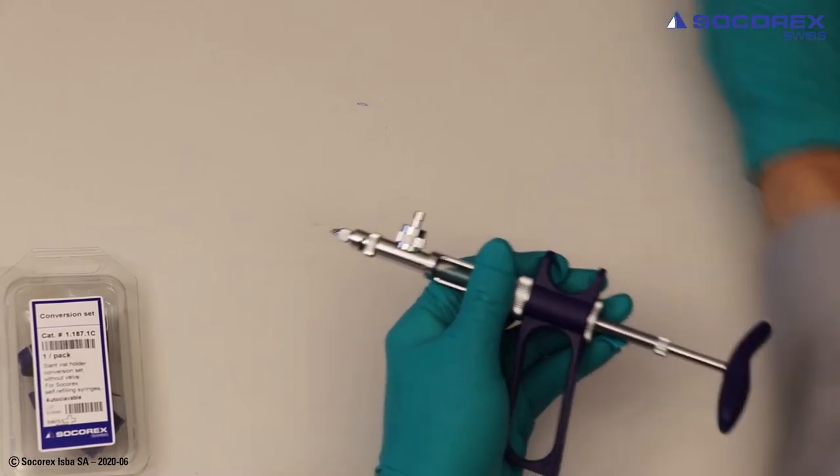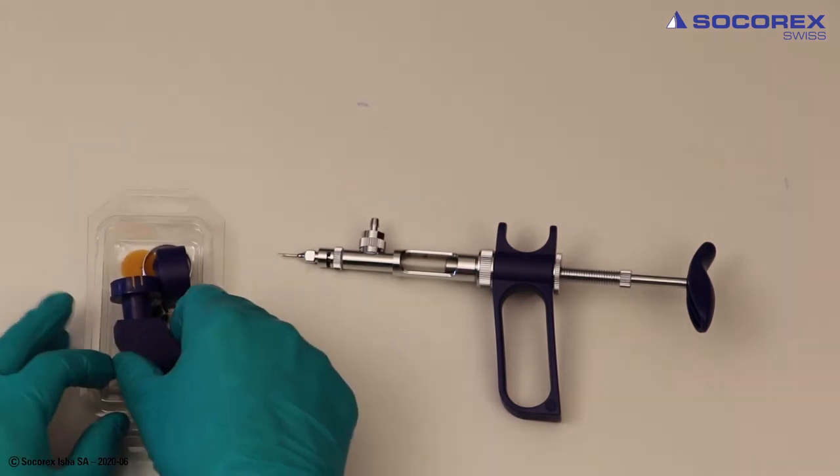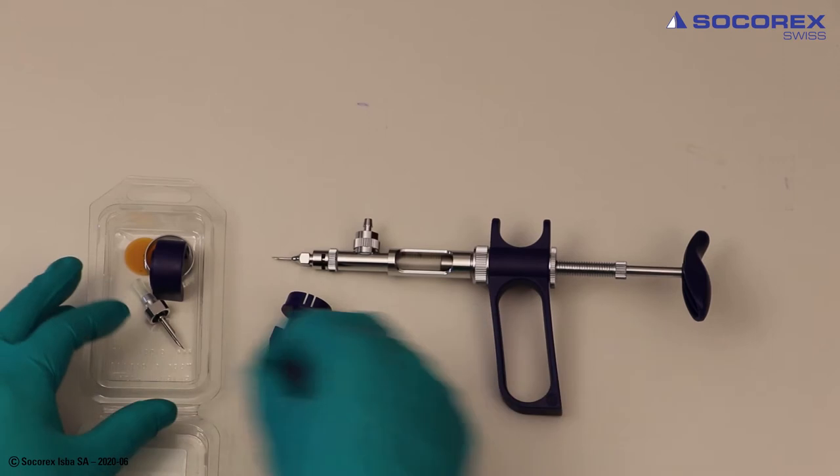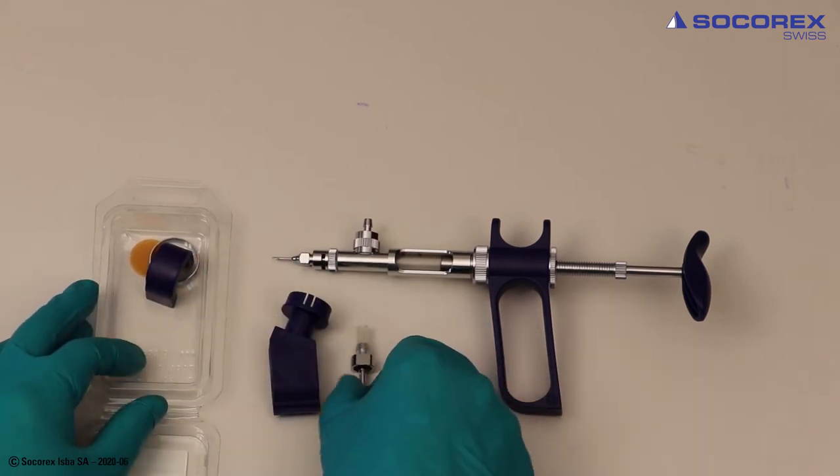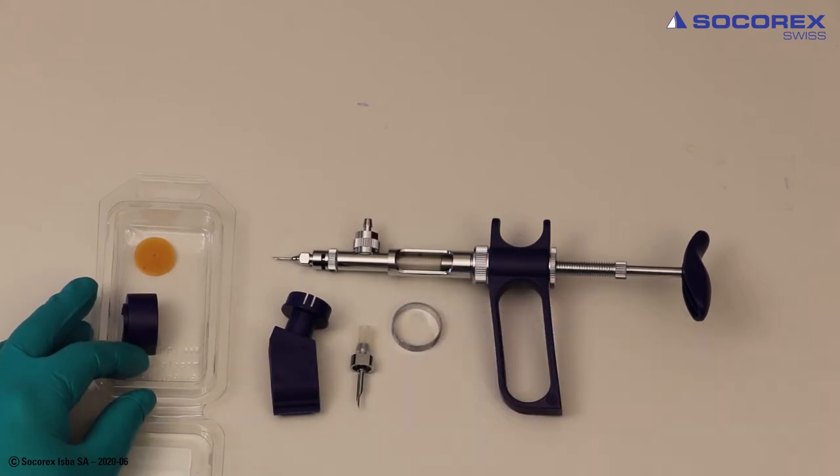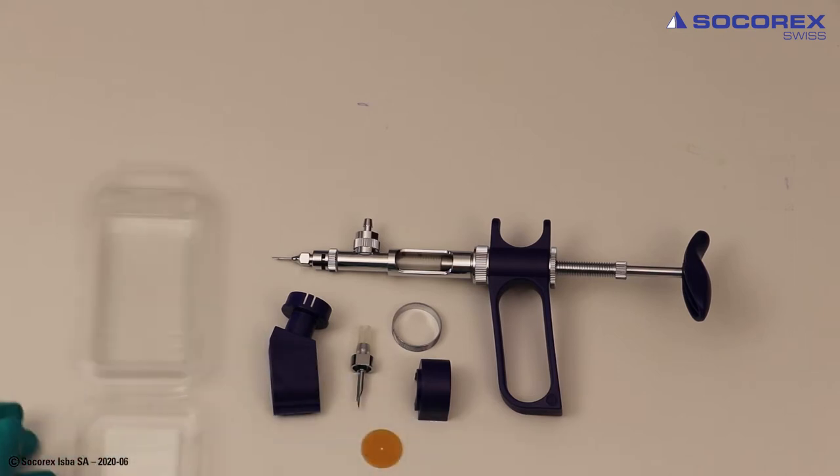Unpack the vial holder consisting of two-part body, aspiration needle and connection tube, metal ring, vial lock and tightness washer.